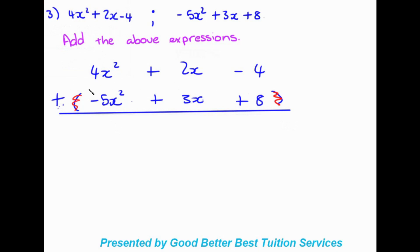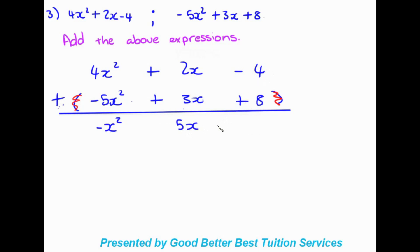Working vertically from left to right: 4x² minus 5x² gives negative x². Then 2x plus 3x gives 5x. Then minus 4 plus 8 gives positive 4. Our final answer is negative x² plus 5x plus 4.